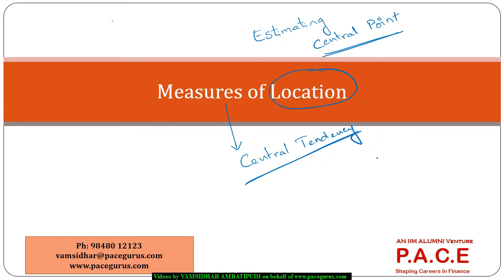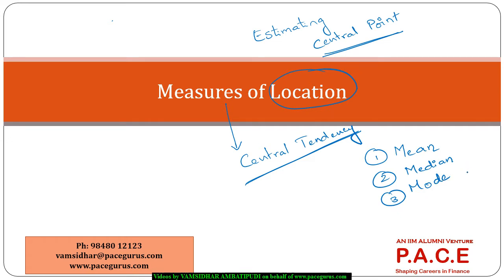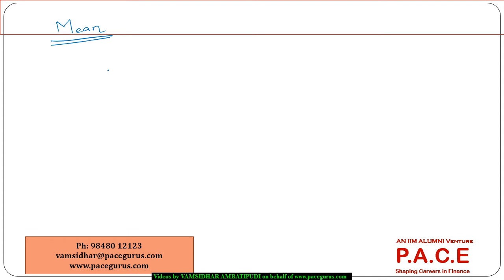The more common kinds of measures that we always come across are: one being the mean, then we have the median, and the third is the mode. Out of these, the mode is not that popular and has very few uses, whereas the mean and the median have different kinds of uses. The more common measure for location or central tendency is the mean.